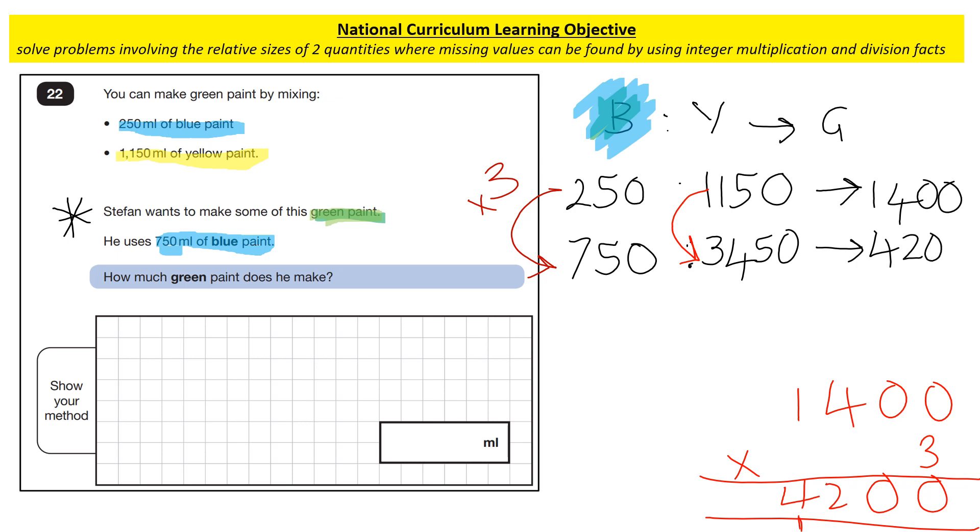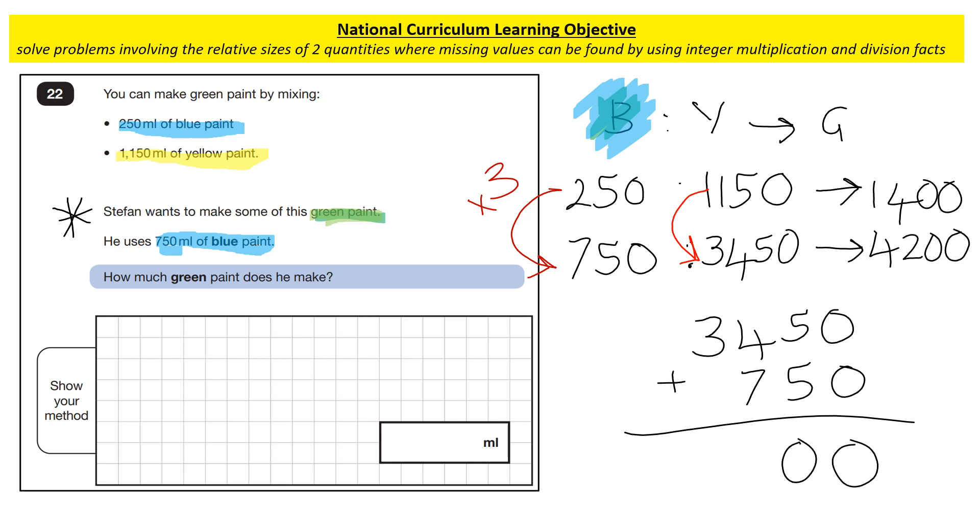And if we double check by adding, it should be the same answer. So if it's not, that's when you would just double check where you might have gone wrong. So I'm going to put the larger number on top: 3,450 plus 750. And add: zero and zero is zero, five and five is 10, four and seven and one is 12, three and one is four. So it's the same answer: 4,200.